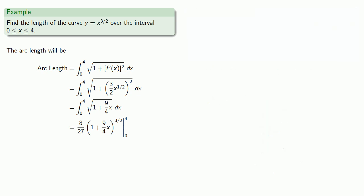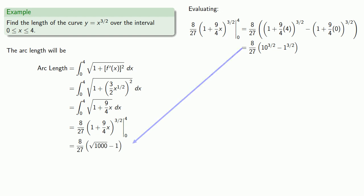Since everything is multiplied by 8/27, we'll remove it as a common factor. So we need to evaluate our function at 4 and at 0. And while this is a perfectly good answer, we'll rewrite this without the fractional exponents because we can.